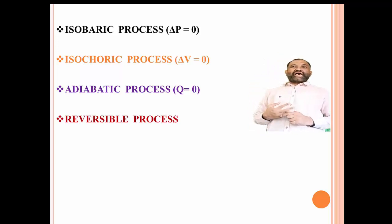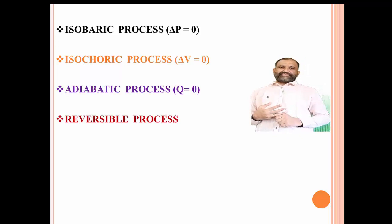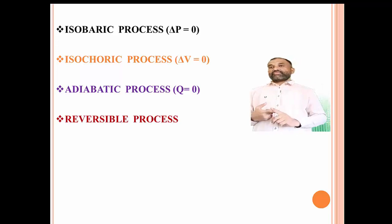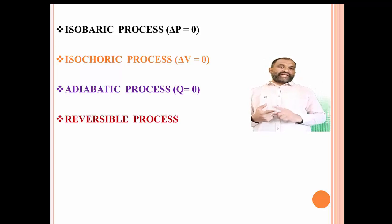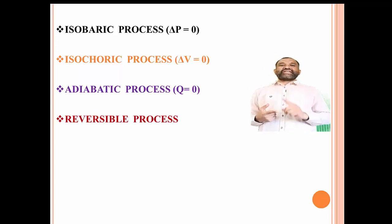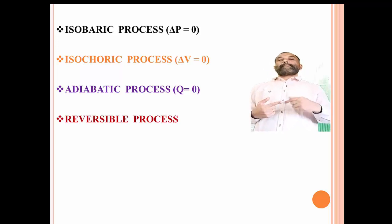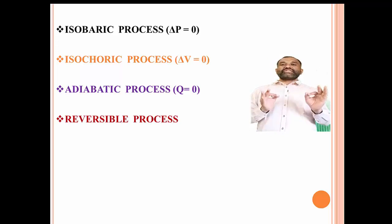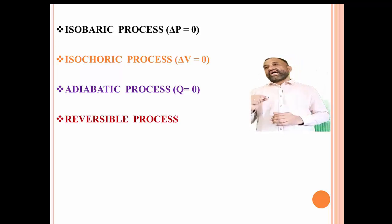The third process is the isochoric process. The process which is carried out at constant volume is known as an isochoric process. Here V1 equals V2, and hence V2 minus V1 — that is final volume minus initial volume — equals zero. That is, the change in volume is equal to zero for an isochoric process.